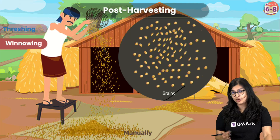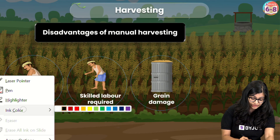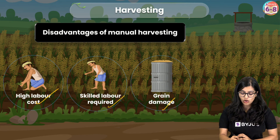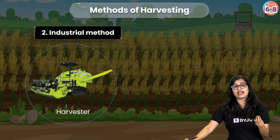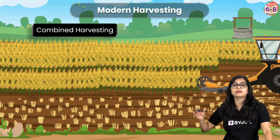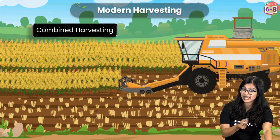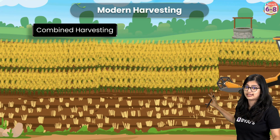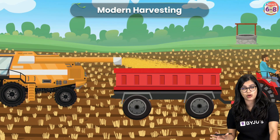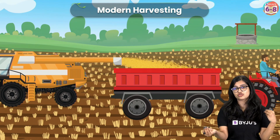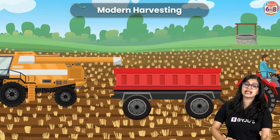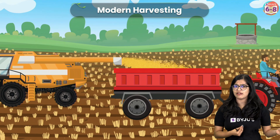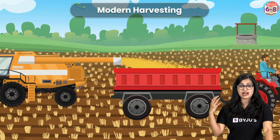The manual method of harvesting and threshing comes with disadvantages: high labor cost, requires a lot of skill, and many grains get damaged in the process. Which is why we resort to industrial methods using machines like combines, which allow us to not only harvest but also thresh at the same time — separating seeds from straw. This way fewer grains get damaged and we get a large quantity with less manual effort.